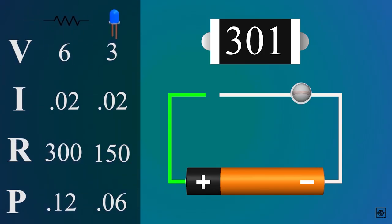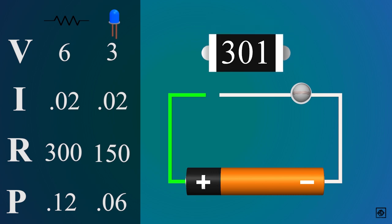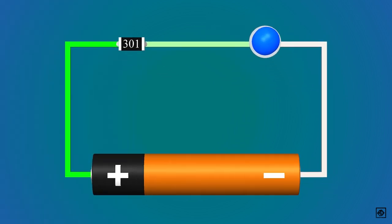Now, after calculating the resistor value, we need to select a resistor based on its power rating, and the power through the resistor is 0.12 watts. Hence, we can select the 1/8th watt or any higher rating resistor.